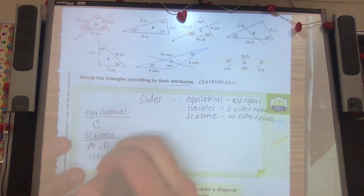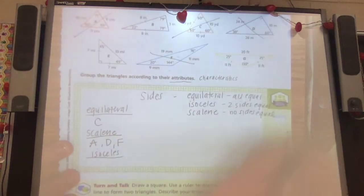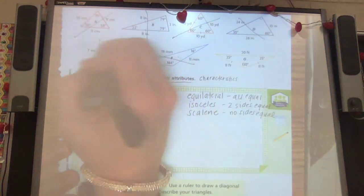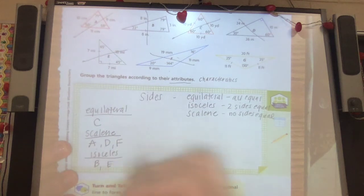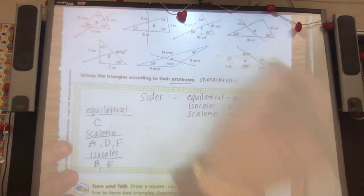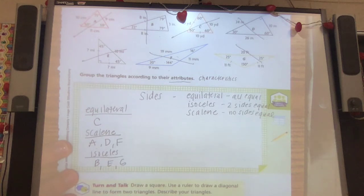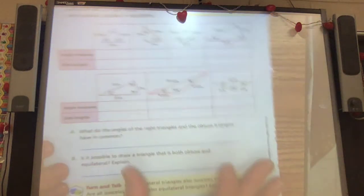And then isosceles has two equal sides. So that's going to be D, because of my 8 and 8. E, because of 7 and 7. And G, because of 11 and 11. Okay. Let's go ahead and turn the page.